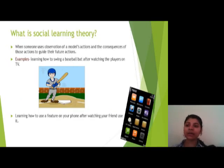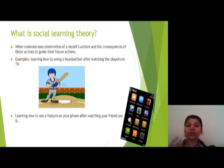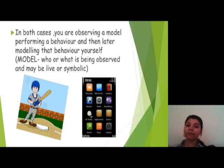What is social learning theory? It is when someone uses observation or models the actions and consequences of those actions to guide their future actions. For example, learning to swing a baseball bat after watching players on TV — we learn through observation how the players are swinging the bat. Another example is learning how to use the features on your phone after watching your friend use it. In both cases, you're observing a model performing a behavior and then later modeling that behavior yourself.